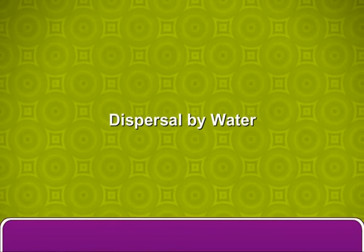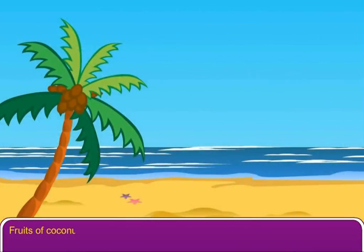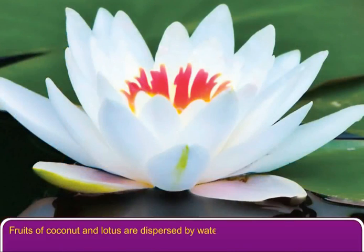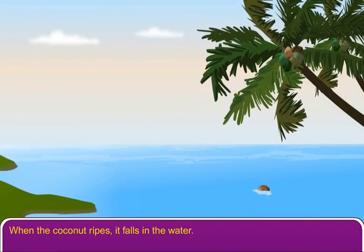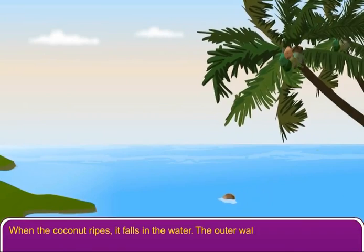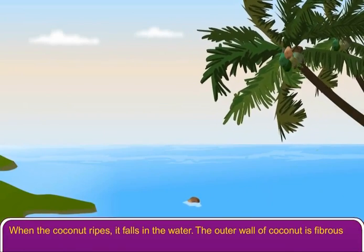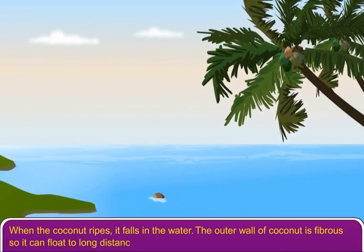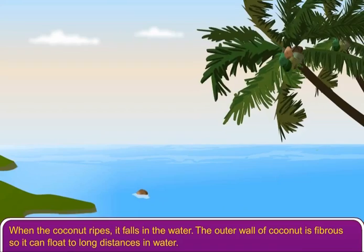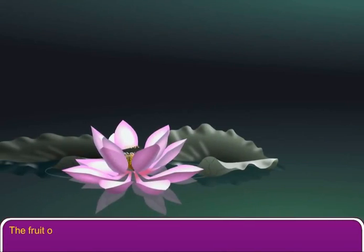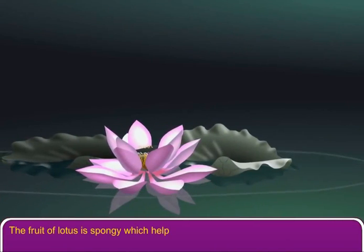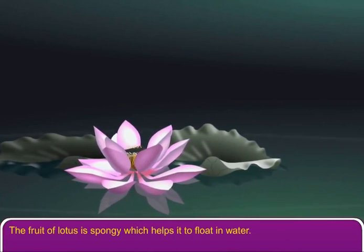Dispersal of seeds and fruits by water. Fruits of coconut and lotus are dispersed by water. When the coconut ripens, it falls in the water. The outer wall of coconut is fibrous, so it can float to long distances in water. The fruit of lotus is spongy, which helps it to float in water.